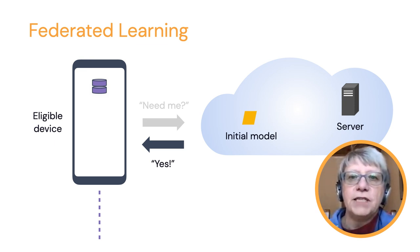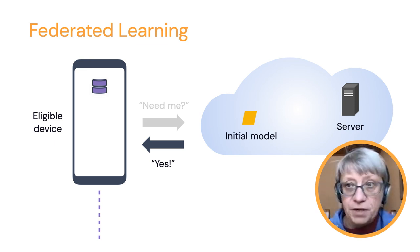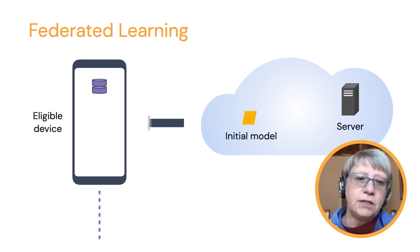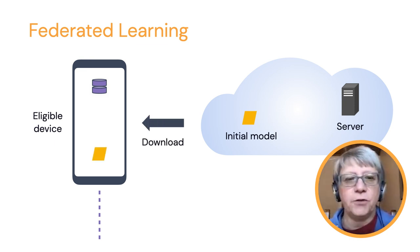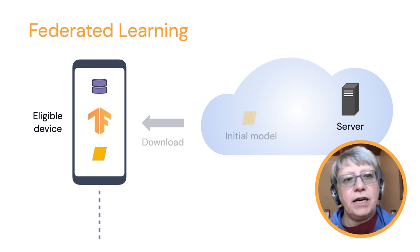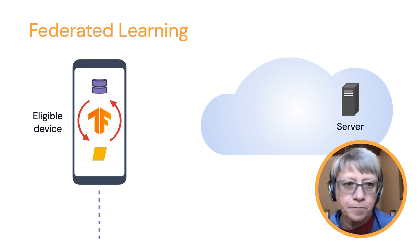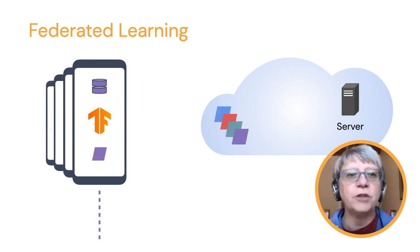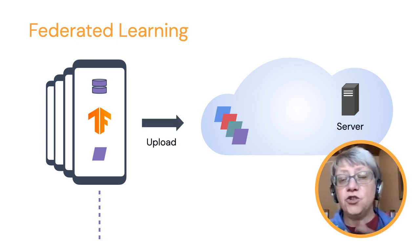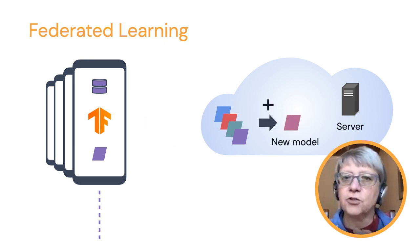At that point, the server will prepare the initial model and push it through a download to the device that is available for training. The device will start training from that model based on the data in its own data store. There isn't only one device doing that — there's a whole bunch of devices, each one iterating on their own data. Then they upload these new models to the server, and the server aggregates the different models to come up with a new model that has a little bit of learning from all those devices.